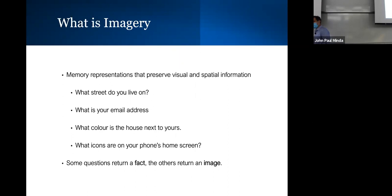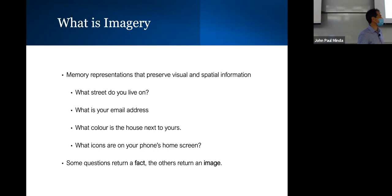Similarly, think about the home screen on your phone. You might know some apps that are on it, but you probably don't know their exact configuration. To answer that, you'd have to close your eyes and really concentrate to visualize your home screen — even though you see it multiple times throughout the day, you probably don't have it committed to memory as a fact. So questions like your email address or street address you answer with facts stored in semantic memory, but questions like the color of a neighbor's house or your phone layout require mental imagery — using your inner eye or inner ear.